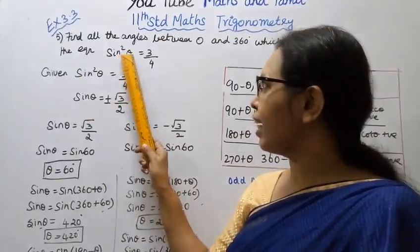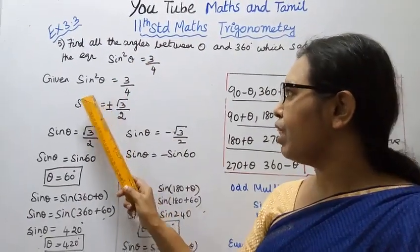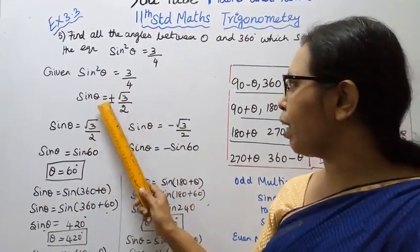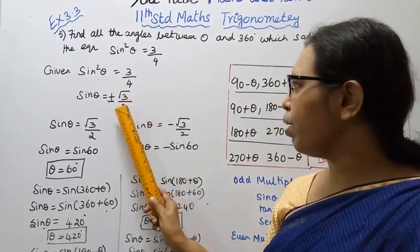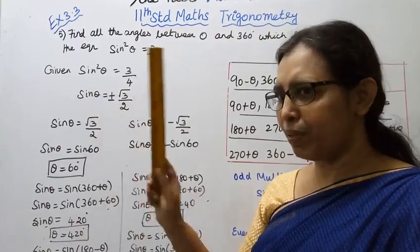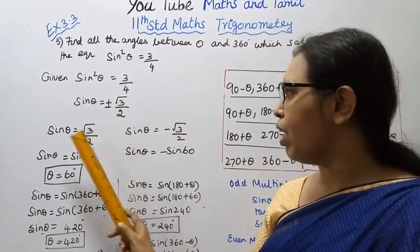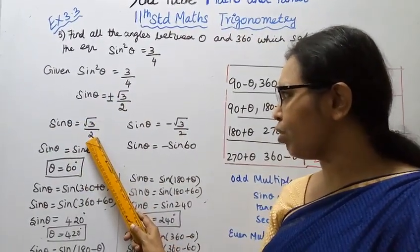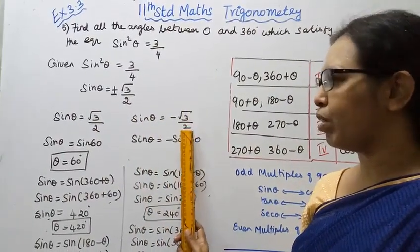Given that sin squared theta equal to 3 by 4. Then sin theta equal to plus or minus root 3 by 4, divided by 2. Therefore sin theta equal to plus or minus root 3 by 2. So we consider sin theta equal to plus root 3 by 2, and sin theta equal to minus root 3 by 2.